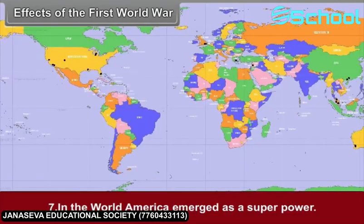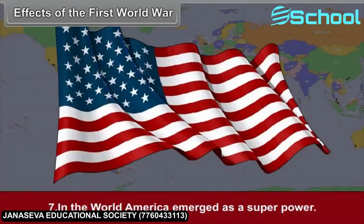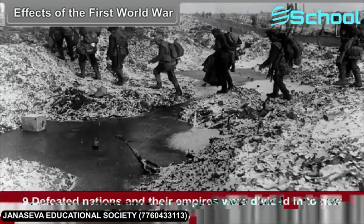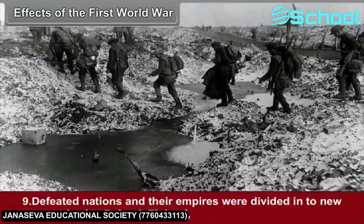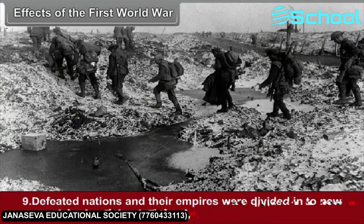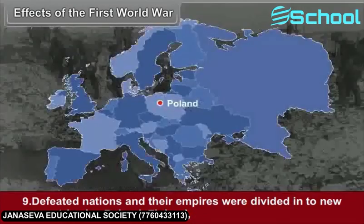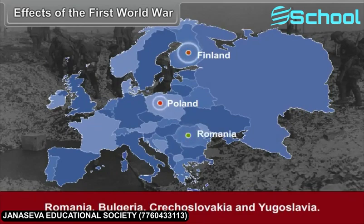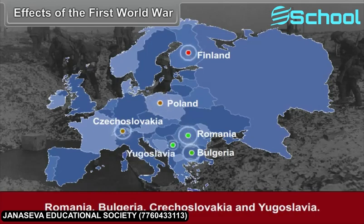Seventh, in the World War, America emerged as a superpower. Eighth, the royal rules in Russia, Germany, Austria, Hungary and Turkey came to an end. Ninth, defeated nations and their empires were divided into new countries — that is, Poland, Finland, Romania, Bulgaria, Czechoslovakia and Yugoslavia.